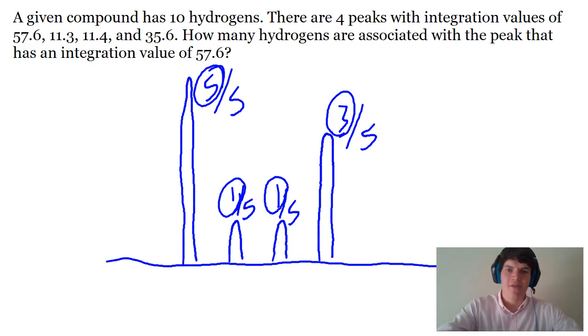The other way is to actually do math and calculate these values exactly, but in terms of the MCAT, typically you can get things right by just eyeballing them and doing some easy approximations. Based on what we determined here, the peak with an integration value of 57.6 would likely represent half of the overall hydrogens, thus representing about five of those ten hydrogens.